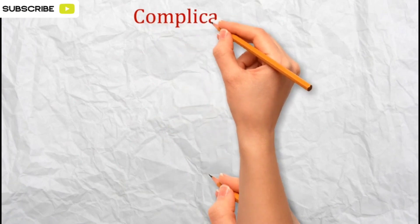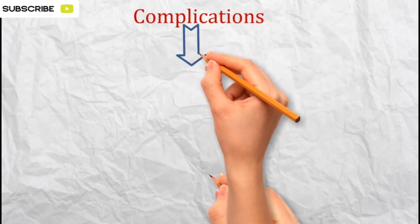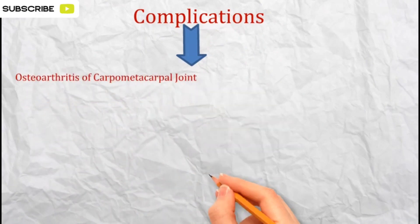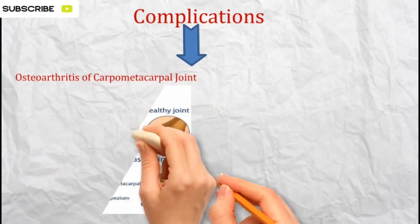Like any medical procedure or injury, there can be complications associated with Bennett's Fracture. It's essential to be aware of these potential issues. First, osteoarthritis of carpometacarpal joint may occur due to joint incongruity and injury to the articular surface during the fracture.